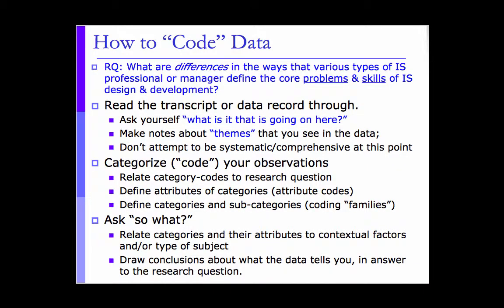At some point in the study, the researcher will begin coding the data. Coding refers to the process of assigning data labels to patterns. There are a plethora of ways and protocols used to code data. You want to read through the transcript or data and ask yourself what is going on. You make notes about the themes or patterns you see, but you're not attempting to be comprehensive or systematic at this point. Then you begin to categorize and code your observations, relating categories and codes back to the research question, and defining what those categories and attribute codes are. You also define categories and subcategories — sometimes called families — and ask yourself: so what? How do all of these relate back to that research question so that you can draw conclusions about what the data tells you?